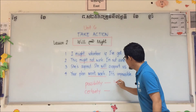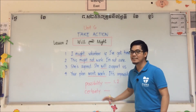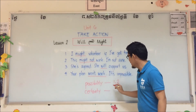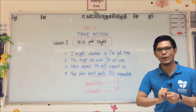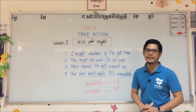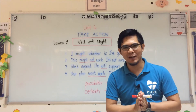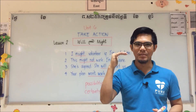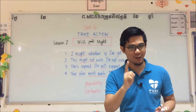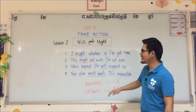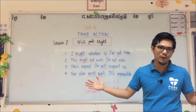Numbers one and two speak about possibility, and numbers three and four speak about certainty. When we talk about possibility, we use 'might' for affirmative and 'might not' for negative. When we speak about possibility, we use 'might' for affirmative and 'might not' for negative — don't forget that.